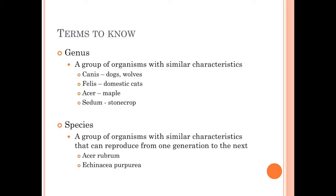All right, so there are some terms that we need to know. A genus is a group of organisms with similar characteristics. Domestic cats, felis. Acer, all maples. Sedum, all stone crops. Maples all have things in common with all other maples. Think about it. Think about all those little helicopters that you see on the ground. All maples produce those. Regardless of other differences, all of them produce those.